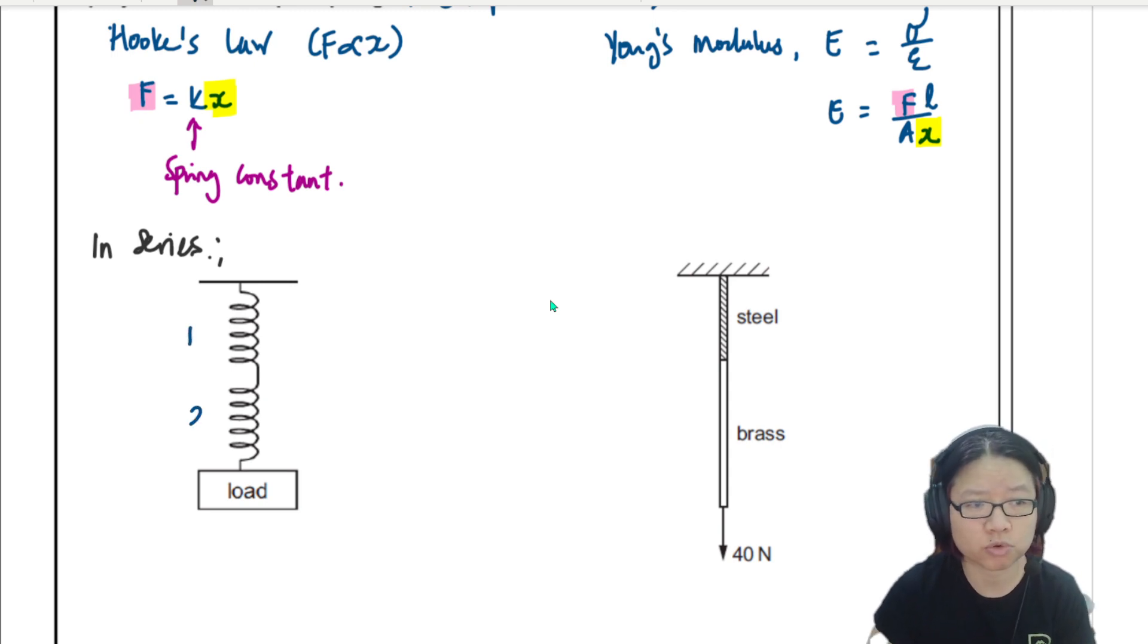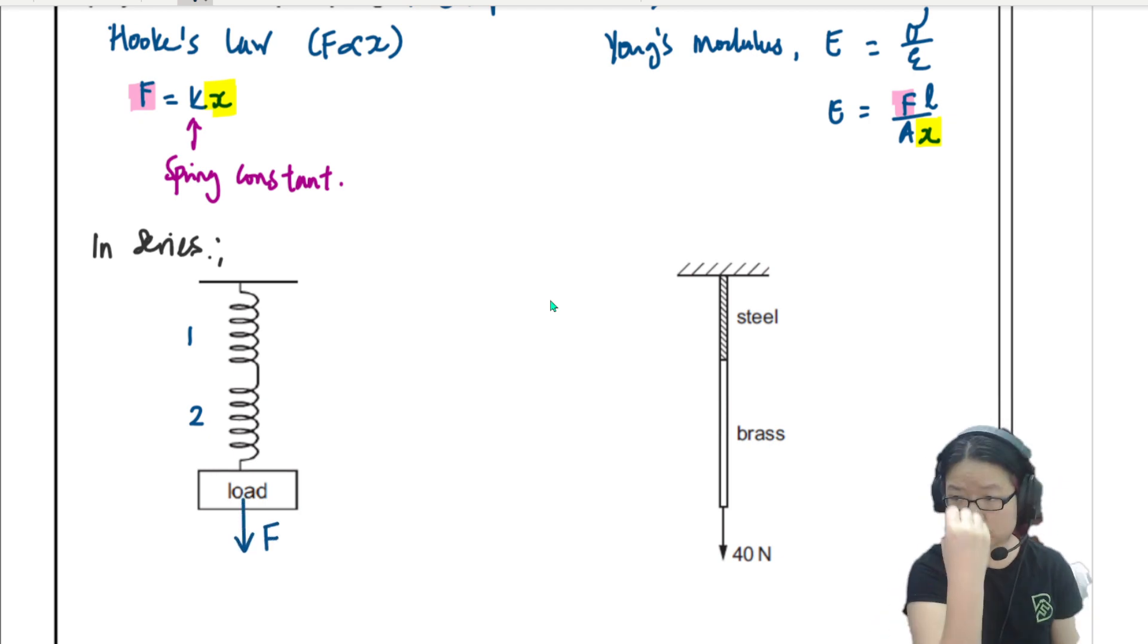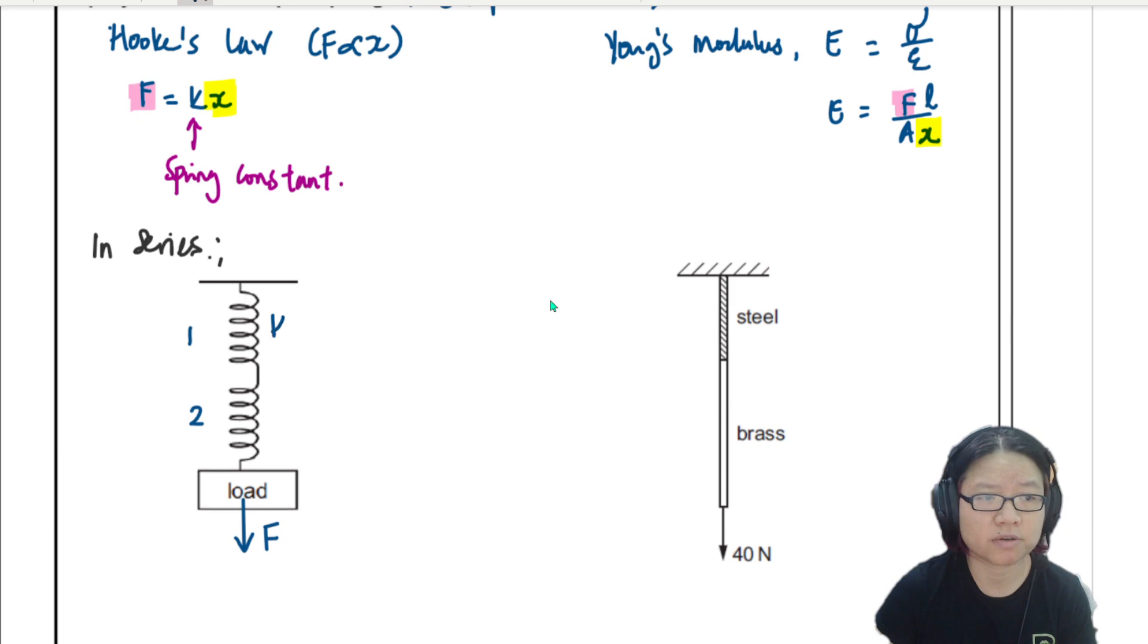Let's look at the spring first. This is spring one, this is spring number two, and then this is my load. Let's say the load exerts a force of F, extending or pulling the spring down. And here there is a spring with spring constant k1, and this is spring constant k2.